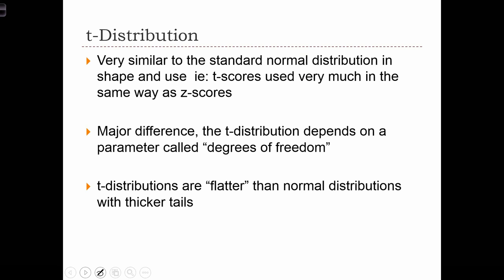T-scores are used in the exact same way that we use z-scores. The major difference is in the shape of the t-distribution. Depending on the degrees of freedom, the parameter used to define the t-distribution, the t-distribution is going to be flatter than normal distributions and it's going to have slightly thicker tails.